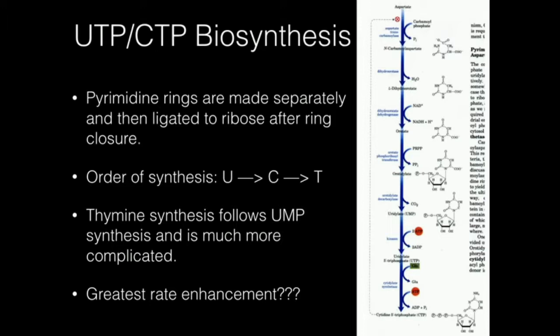Not to get into all the weeds of this pathway, but this is the pathway. We start with aspartate, an amino acid — pyrimidines are made from aspartate. We're going to react with this enzyme called aspartate transcarbamylase. This enzyme, aspartate transcarbamylase, also abbreviated ATCase, is one of the most important and highly studied allosteric enzymes.